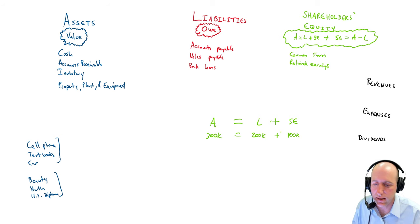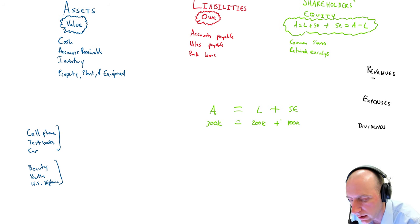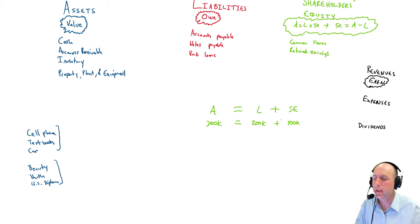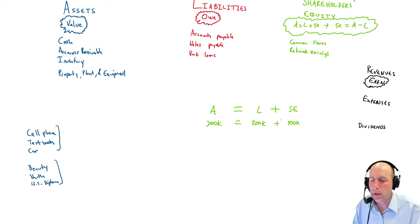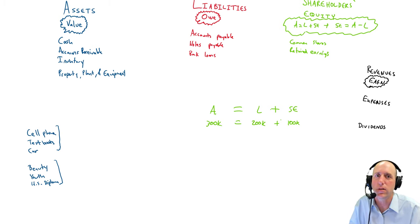So we've got these three key accounts: assets — the things of value a company owns or controls; liabilities — what's owed; shareholders' equity — the owner's piece of the pie. Now, revenues, expenses, and dividends — I'll be quicker here. Revenues: the word I want you to think of is 'earn.' Revenues are what happens when the company does what it does to earn money. Walmart sells stuff — they have sales revenue. My university charges tuition — they have tuition revenue. If you were a landlord and you charged rent, you'd have rent revenue. It's the business doing what it does to earn money.